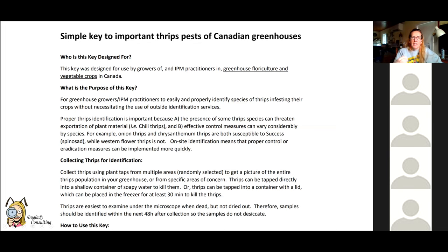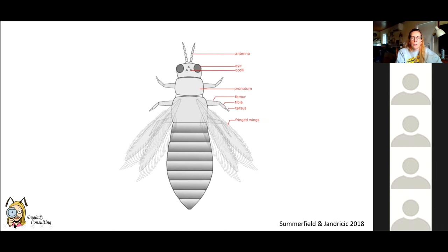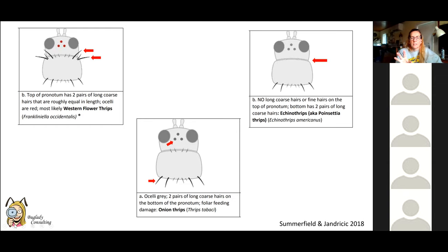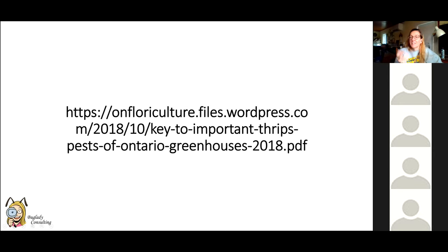For thrips ID, there's an excellent key designed for Canadian greenhouse growers. It still works for many situations even outside Canada. It covers basic anatomy with great line drawings by Sarah, explaining how to tell thrips apart — and this is why you need magnification to distinguish inkind thrips from onion thrips from western flower thrips. Just Google 'Canadian greenhouse thrips key' and it will come up.